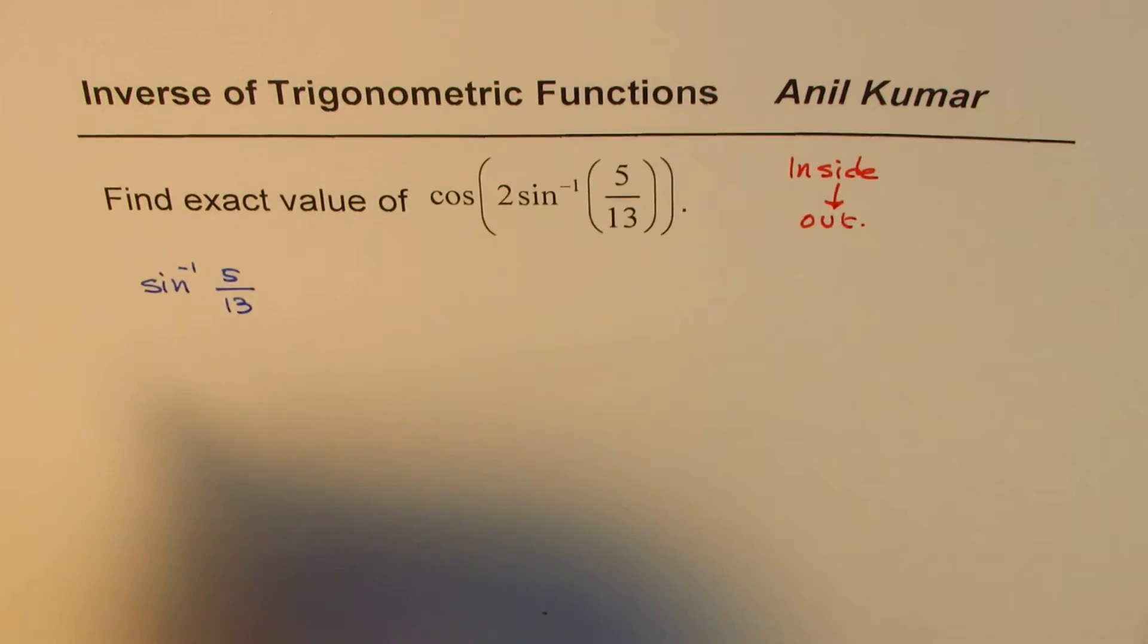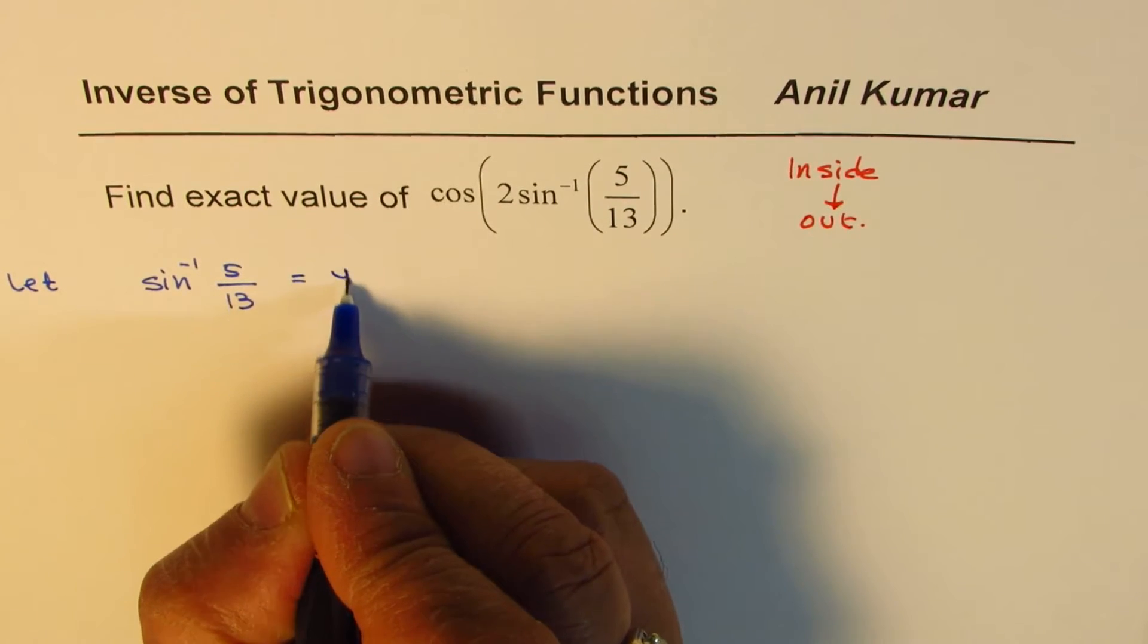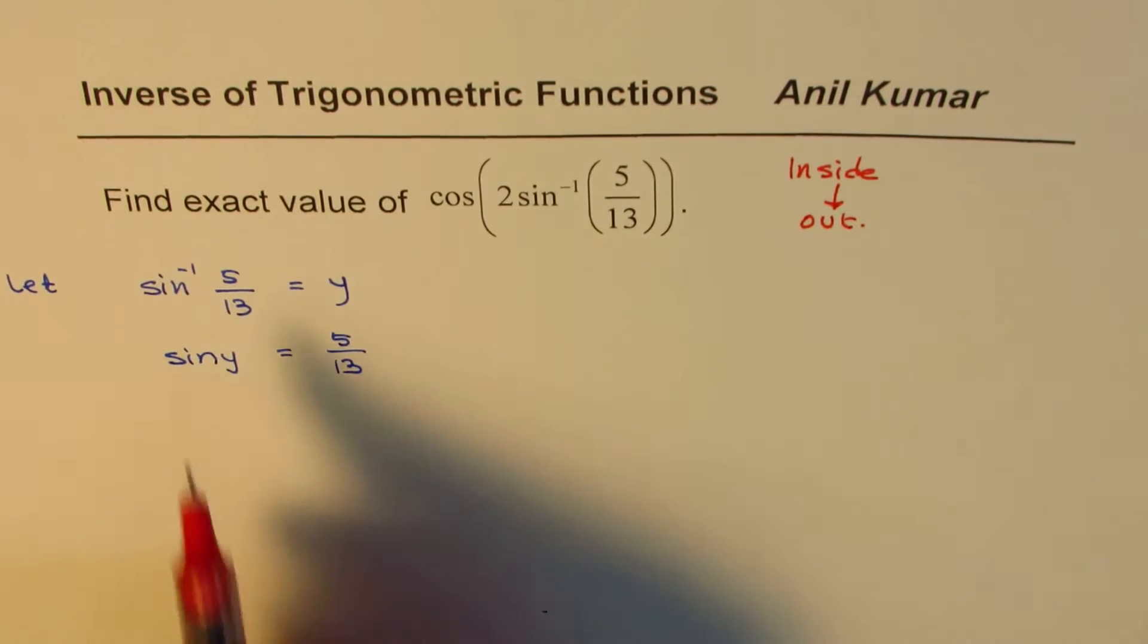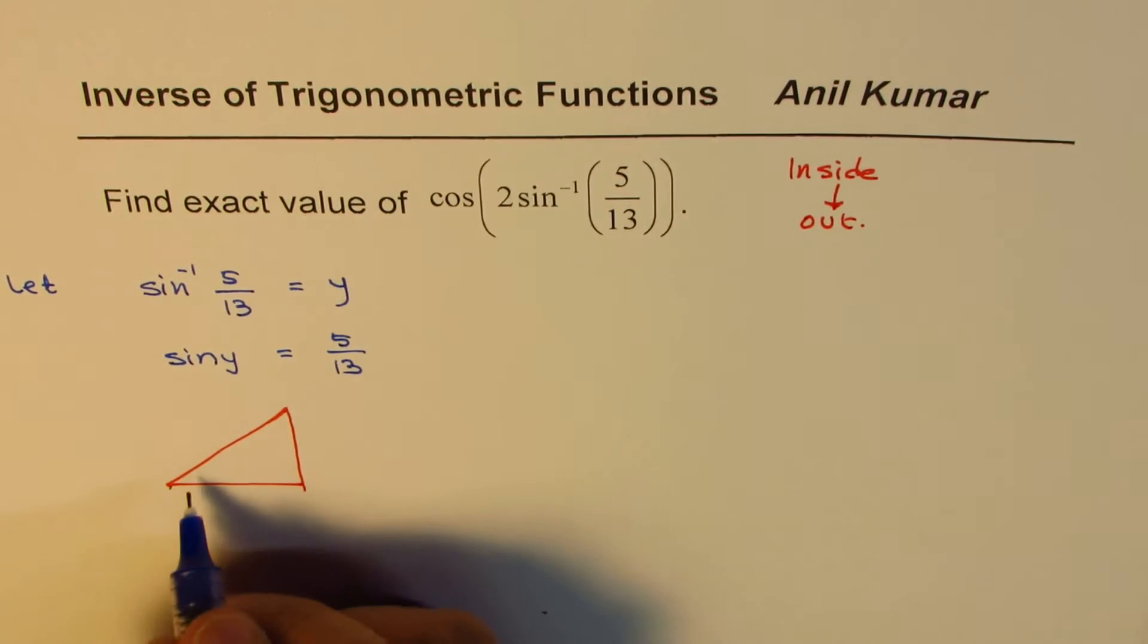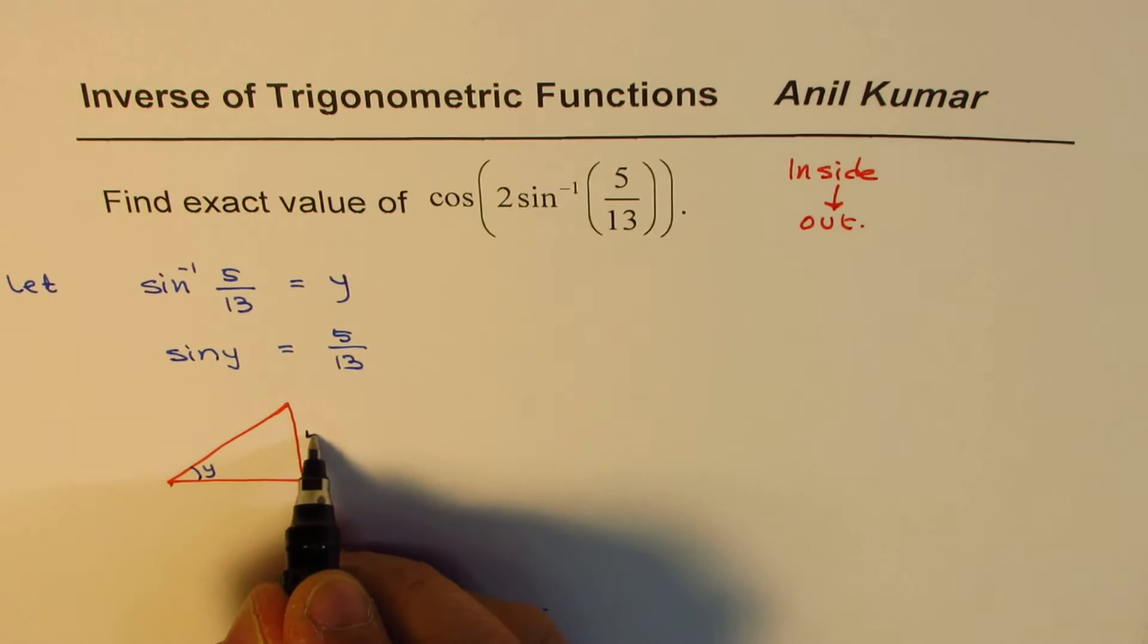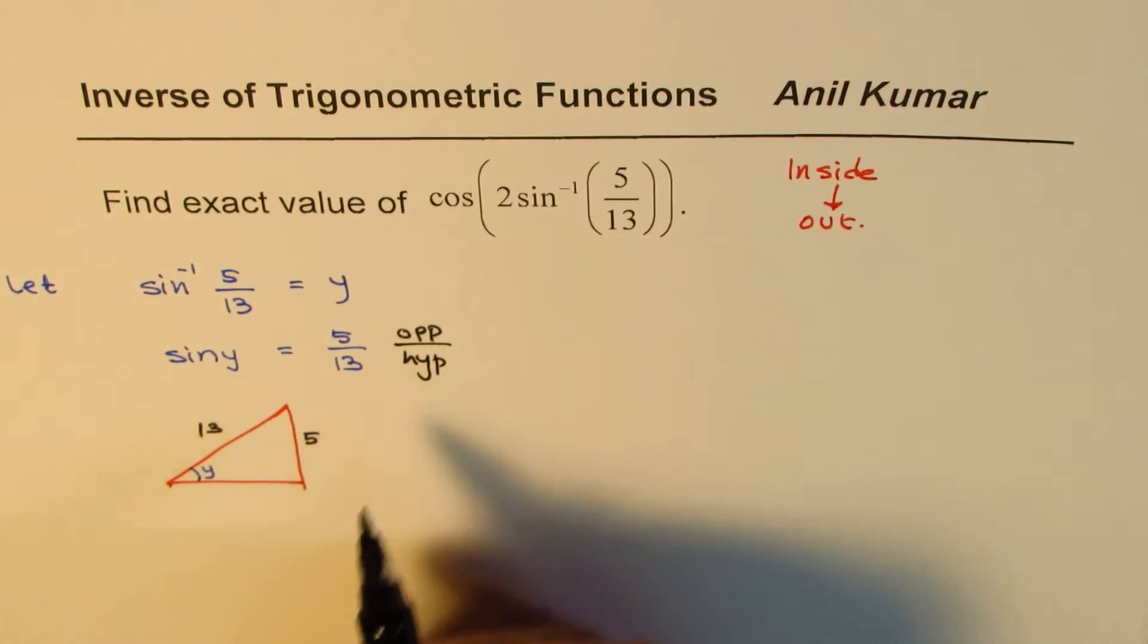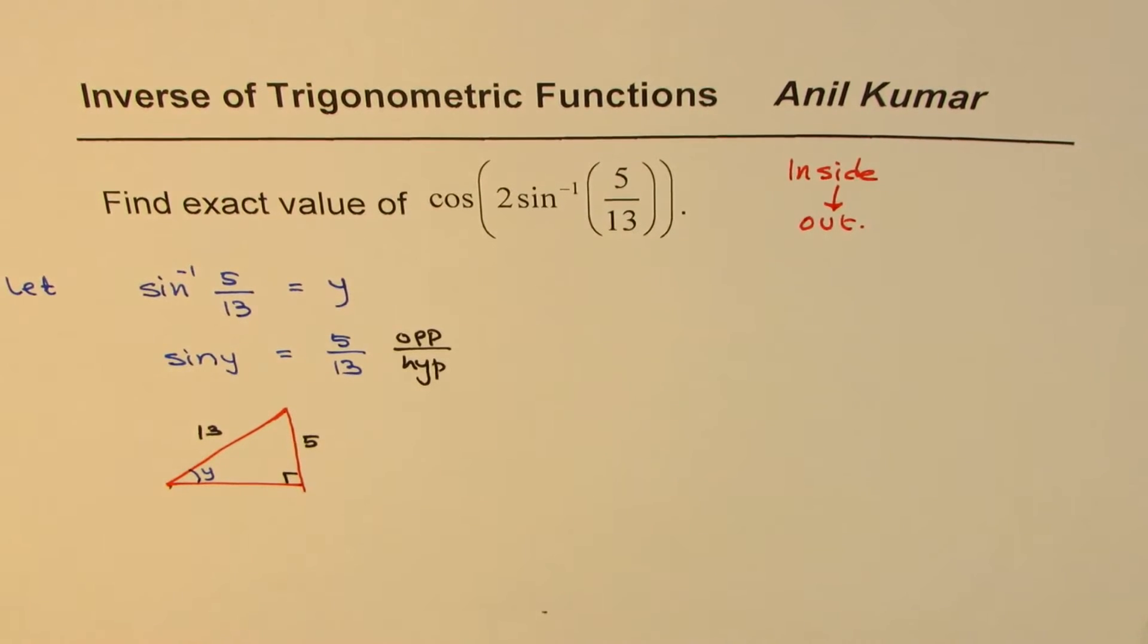Now what does this mean? Let us say that this inside function sin^(-1)(5/13) is equal to y. In that case, sin(y) equals 5/13. So that is what it means. So it really means that if I have a triangle here, let me make one, where the angle is y. In that case, 5/13 means opposite side is 5 and hypotenuse is 13. Since sin(y) is opposite over hypotenuse, so opposite to angle y is 5 and hypotenuse is 13 if I have a right angle triangle.